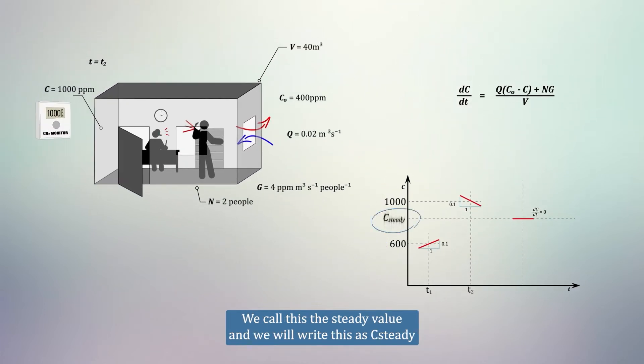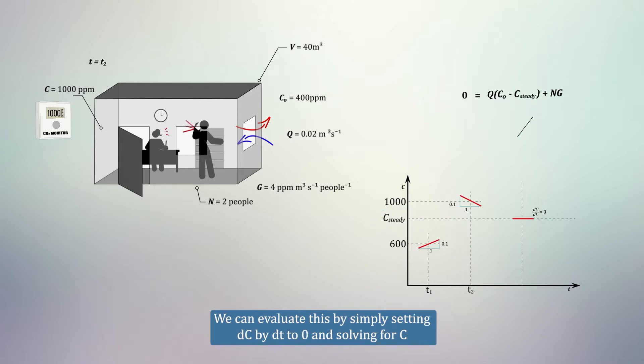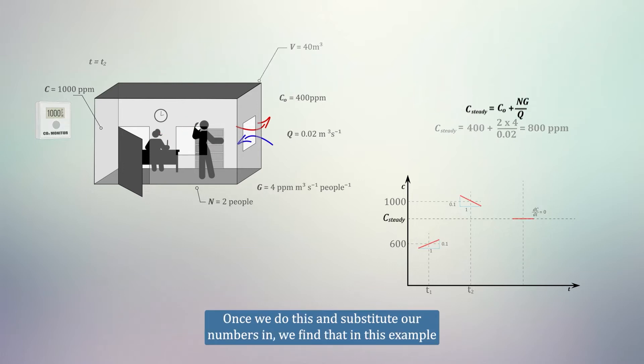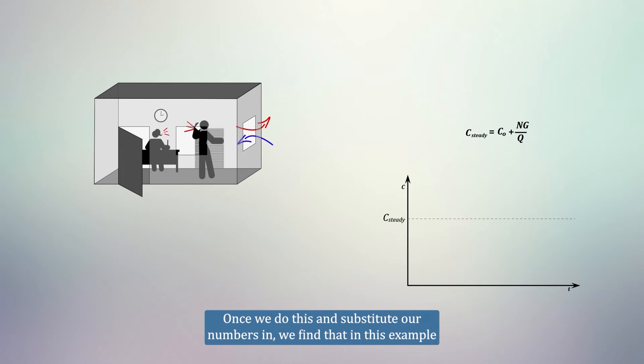We call this the steady value, and we will write this as C steady. We can evaluate this by simply setting DC by DT to 0, and solving for C. Once we do this, and substitute our numbers in, we find that in this example, when the CO2 level is 800 ppm, the room is at steady state, or equilibrium, meaning the CO2 level will not change in time.